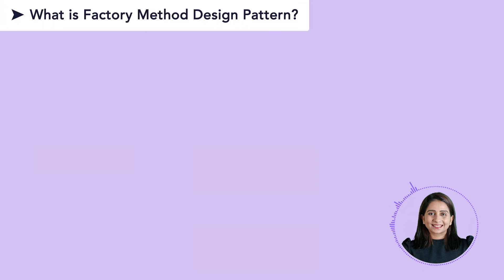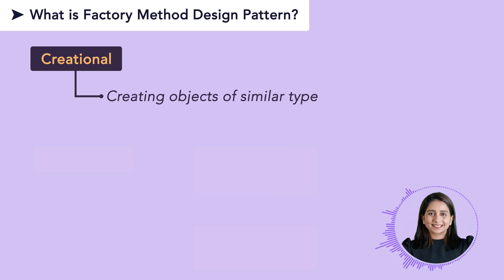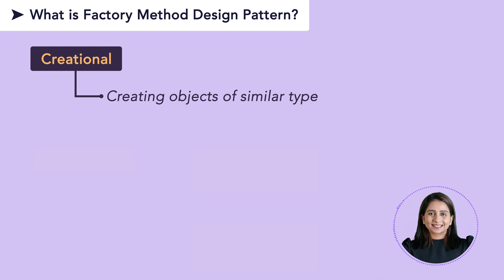Let's first understand what factory method design pattern is. Starting from the fundamentals, it is a creational design pattern. It is used in order to create objects of classes, or to instantiate objects. The catch, however, is that it is used to create objects which can be of similar type but vary a little in terms of implementation.